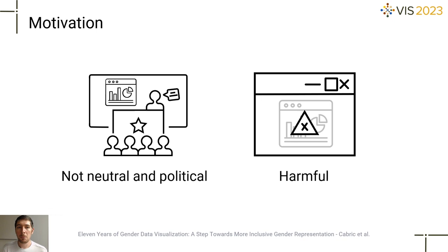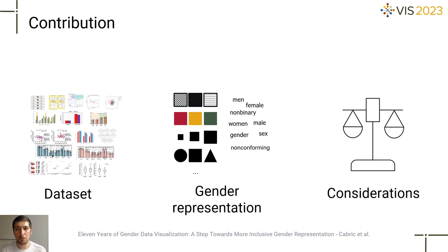Our contribution with this work is three-fold. First, we provide a set of scientific figures representing human gender data. Second, we analyze scientific and public-facing visualizations in terms of their use of visual variables and their use of language. And finally, we provide a set of considerations for representing gender in data visualizations.